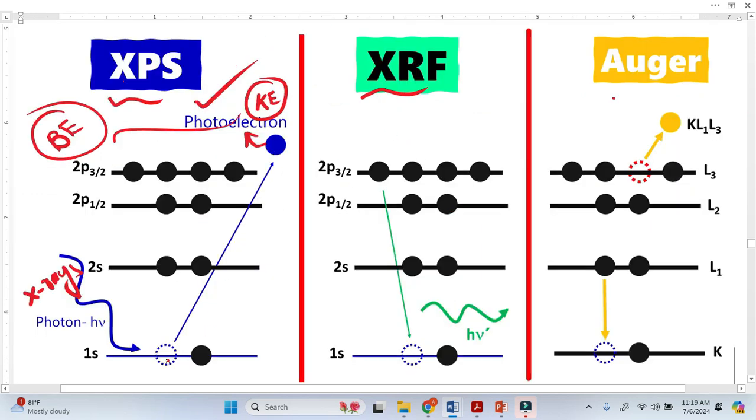Once we have the vacancy here in the core orbitals or shell, the atom is in the excited state. This atom has to relax. It will relax when this vacancy is filled by another electron. There is a probability that the electron from the higher orbitals fills this vacancy. Once there is a transition from higher to lower, there will be emission of electromagnetic radiation, and this electromagnetic radiation is in the form of X-ray. This is why it is called X-ray fluorescence phenomena.